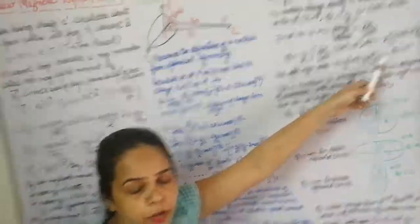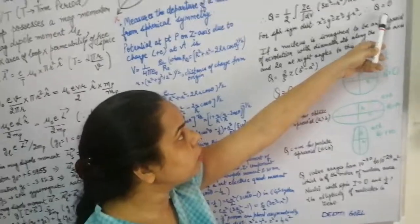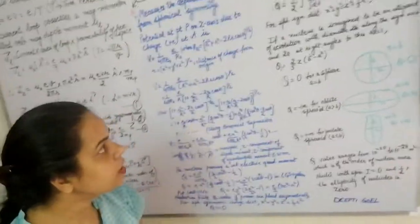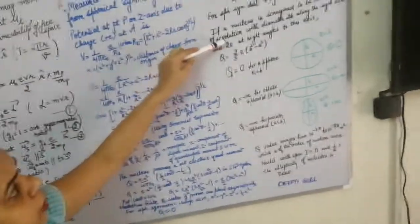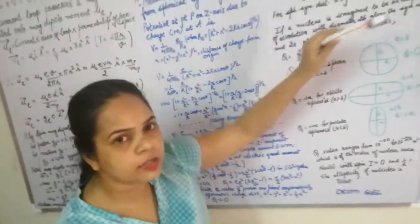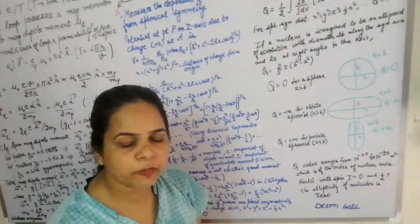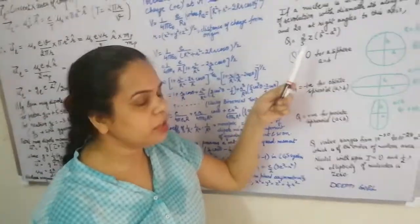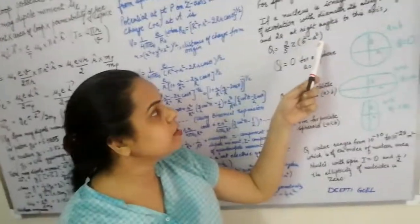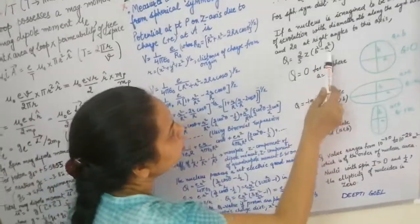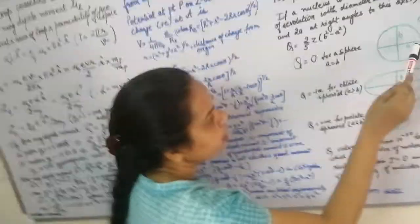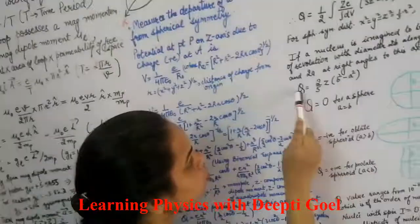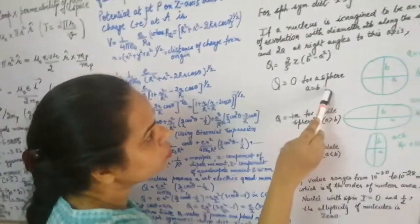If the nucleus is imagined as an ellipsoid of revolution with diameter 2b along the symmetry axis and 2a at right angles, then Q = (2/5)·Z·(b² − a²). For a sphere (a = b), b² − a² = 0, so Q = 0.